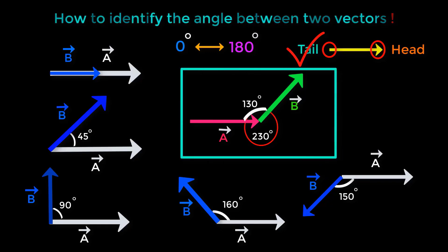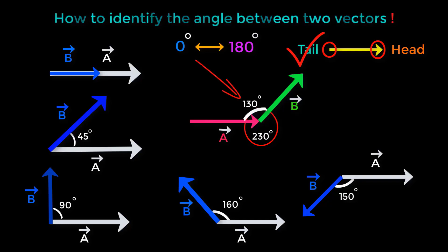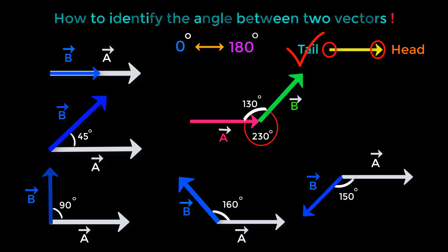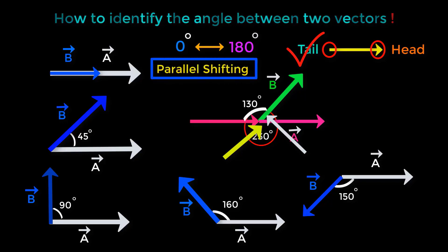But look at here — this is the head of vector A and this is the tail of vector B, so this angle cannot be the angle between these two vectors. A question may come to your mind: which angle will be the angle between these two vectors? Don't worry. Just shift this vector from here to here and join its tail to the tail of this vector by using parallel shifting.